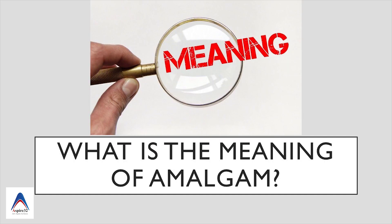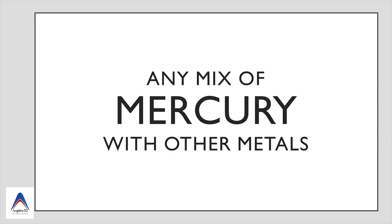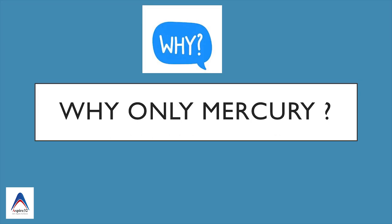Coming to the meaning of dental amalgam: basically, dental amalgam means it is a mixture of two or more metals, but one of the metals has to be mercury. Mercury is very essential in dental amalgam, and that's why we discuss so much about mercury — why it is harmful to the environment and why dental amalgam has to be discontinued. But you have to ask: why was mercury chosen in dental amalgam, and why not any other metal?